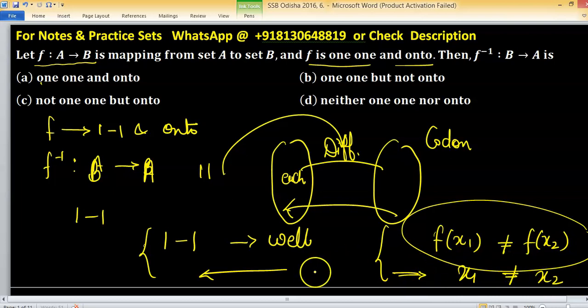In other words, we consider f of x₁ equals to f of x₂. If two images are coinciding, then its input is also coinciding. So there are two ways you can use to prove one-one.